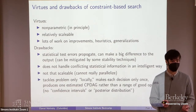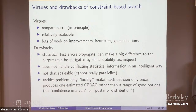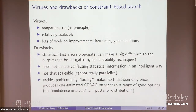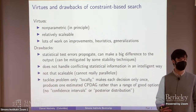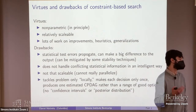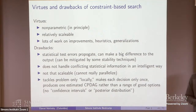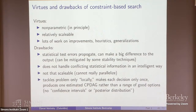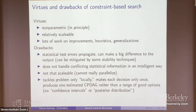Those are the ingredients needed to run PC: once you've chosen a test and a way of choosing alpha, the significance threshold, you can run PC. The virtues of PC include its nonparametric-in-principle quality — I can be as nonparametric as statistically feasible using nonparametric independence tests. It's relatively scalable: applications to hundreds of variables are routine, thousands are possible, and it has been used in genetics applications.